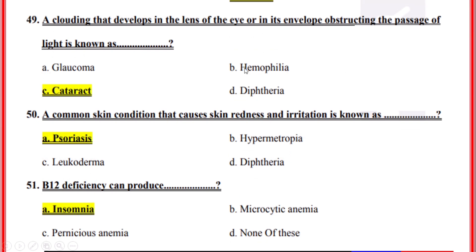A clouding that develops in the lens of the eye or in its envelope, obstructing the passage of light, is known as? Correct option: C, Cataract.